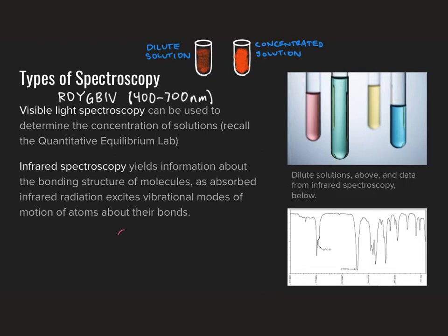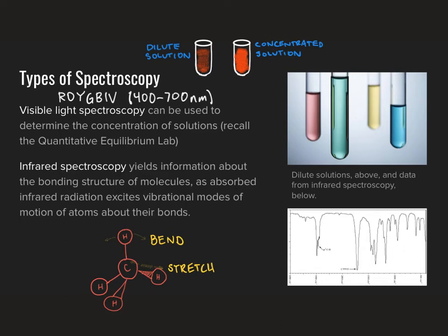The second type of spectroscopy involves what we refer to as infrared spectroscopy, which uses infrared light — longer wavelength and lower energy than visible light. Infrared radiation is primarily absorbed by atoms and it excites the vibrational modes of motion of those atoms about their bonds. Because of that, understanding how infrared light is absorbed yields information about the bonding structure of molecules. It can tell us how bonds are stretching, how bonds are bending, and what atoms are involved in the chemical bonds within a molecule. Infrared spectroscopy tells us about bonding structure of molecules by exciting vibrational modes of motion of those atoms about their bonds.